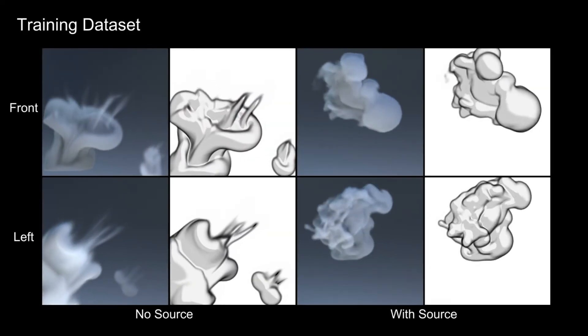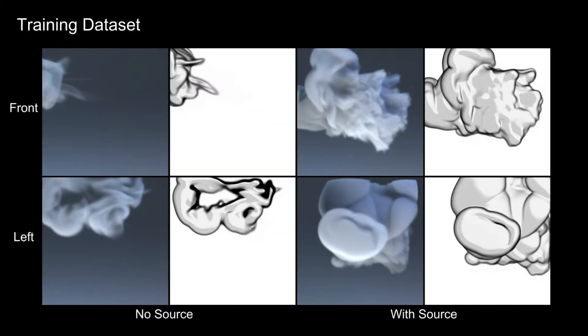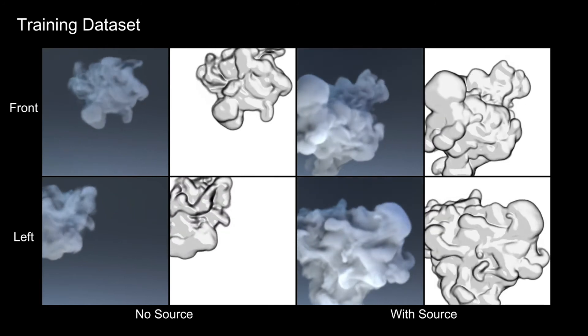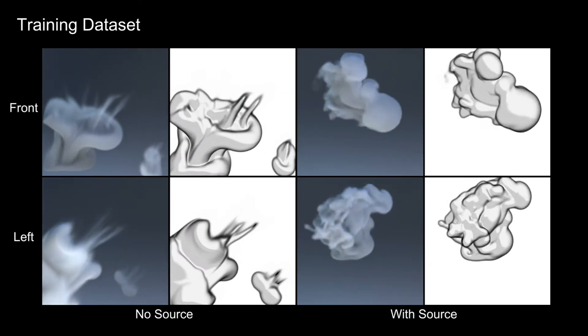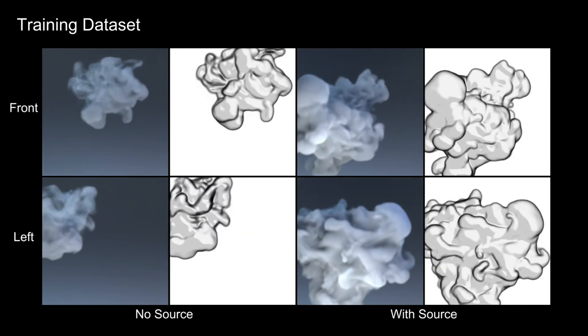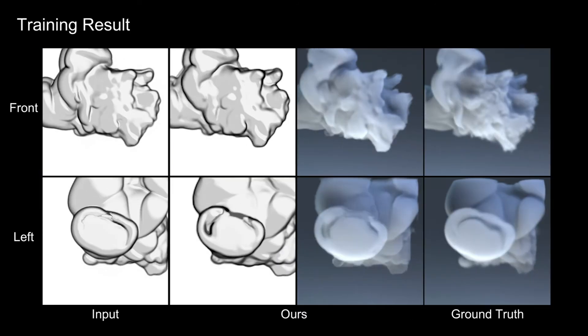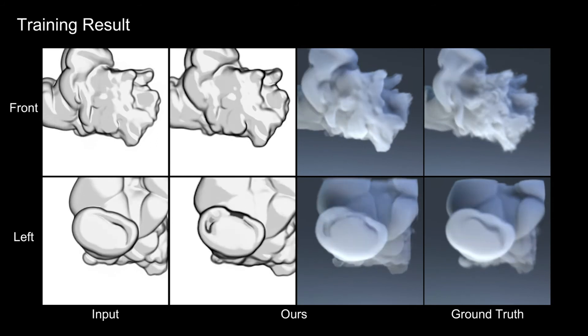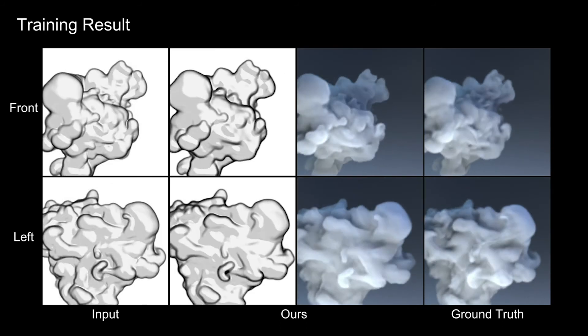Our training dataset captures a wide range of different smoke simulations to ensure general applicability of the approach. The shapes of initial sources are generated by computing a random shape from a set of unions or differences of 3D primitive shapes, and setting the resulting shape as initial density of a fluid simulation.